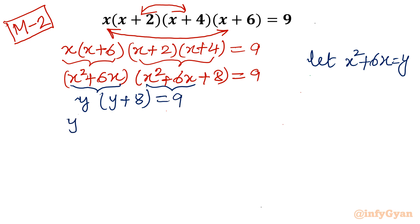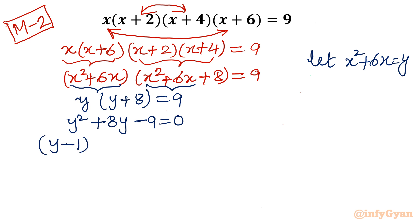Now I frame the quadratic equation: y² plus 8y minus 9 equal to 0. We can apply factorization or the Sridharacharya formula — I can directly write the factors as (y minus 1)(y plus 9) equal to 0. From here, y equals 1 and y equals minus 9.